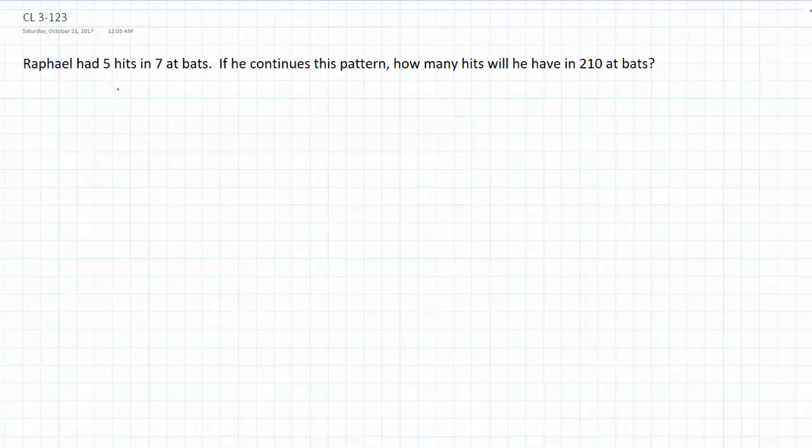So what this is saying is that for every 7 times that Raphael bats, he hits the baseball 5 times. He has 5 hits.